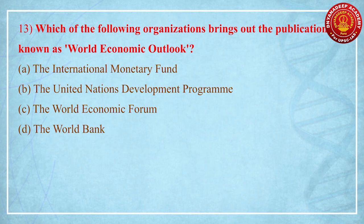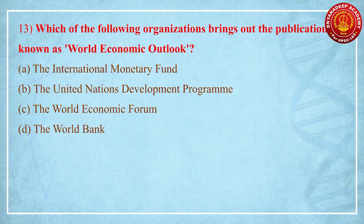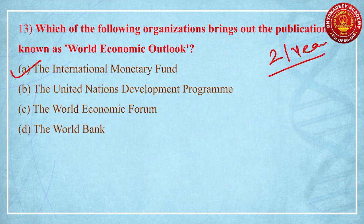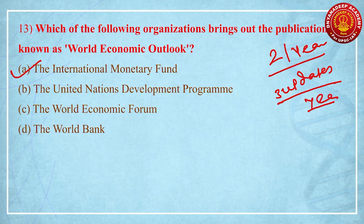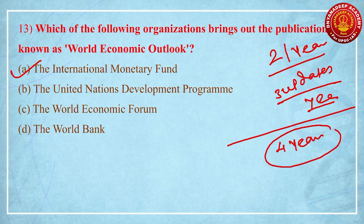Third question, question number 3: which of the following organizations brings out the publication known as World Economic Outlook? This is a very straightforward question that is repeated almost every 2 to 3 years. World Economic Outlook is published by the International Monetary Fund. Some important facts: it is published twice per year and also provides almost 3 updates per year. It portrays the world economy in the near and medium context, and basically provides all kinds of forecasts for a time period of 4 years.